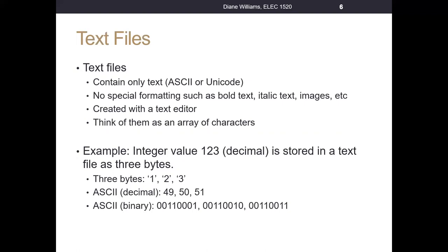When you read a text file in, you make sense of the information that's there. For example, if we write the base-10 integer value 123 to a text file, it gets written as three separate bytes: the character '1', the character '2', and the character '3'. Looking at the numeric contents, from the ASCII table the character '1' is decimal 49, '2' is decimal 50, and '3' is decimal 51 — with corresponding binary representations for each.